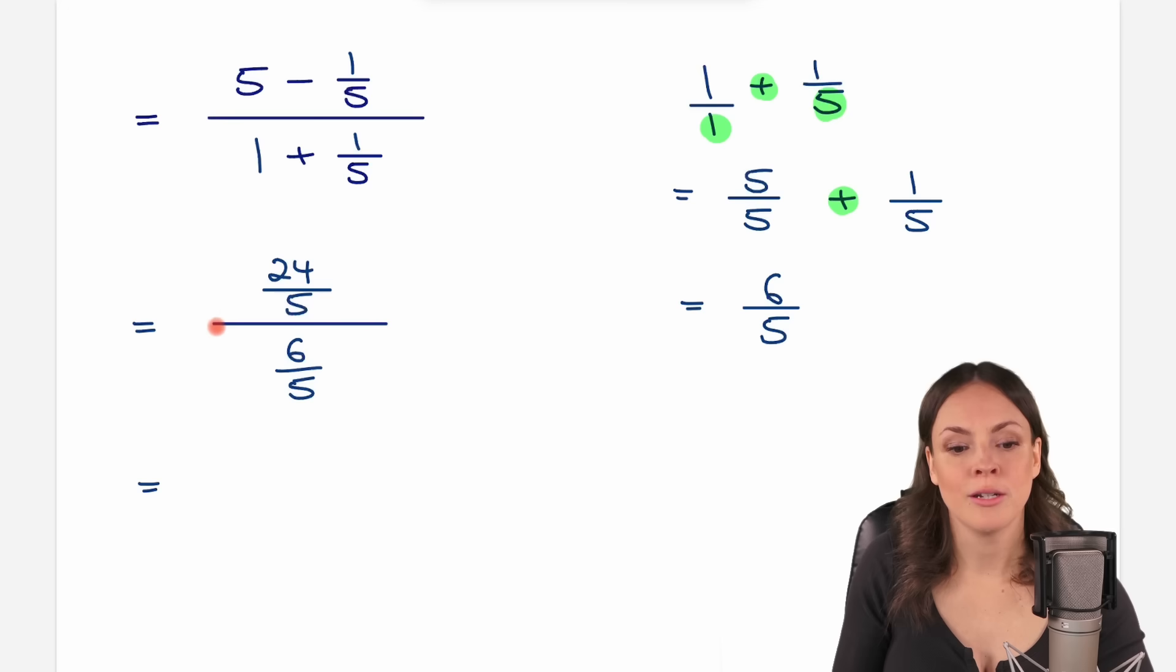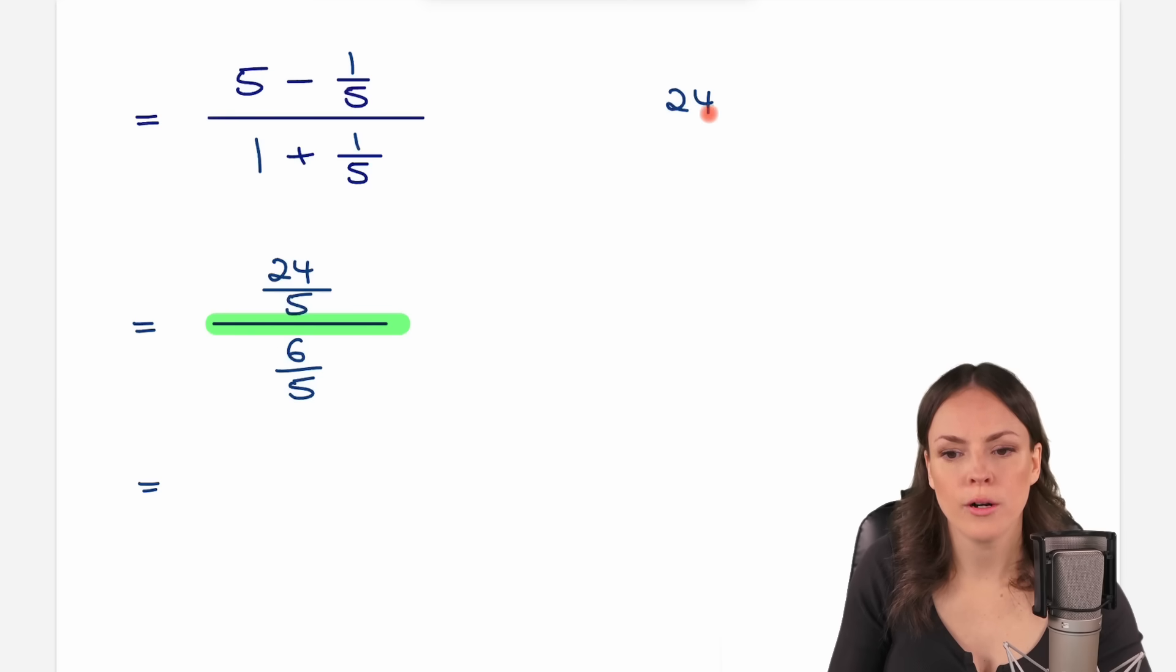Now we have a fraction divided by another fraction. How can we divide fractions? Well, we have 24 over 5 divided by 6 over 5. You divide by a fraction by multiplying by its reciprocal. So, instead of dividing, we are going to multiply, and then we have to change these two numbers. So, we take the 6 and the 5, write the 5 here, and the 6 down here.